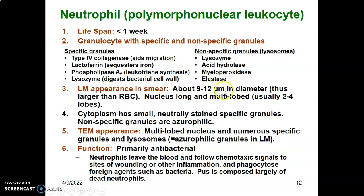Non-specific granules in the neutrophil contain enzymes such as lysozymes, acid hydrolase, myeloperoxidase, and elastase. Under light microscopy, a neutrophil is 9 to 12 micrometers in diameter — larger than a red blood cell. The nucleus is long and multi-lobulated, having two to four lobes. The cytoplasm has small neutrally-stained specific granules and azurophilic non-specific granules. Under the electron microscope you'll see multi-lobed nuclei with numerous specific granules and lysosomes.